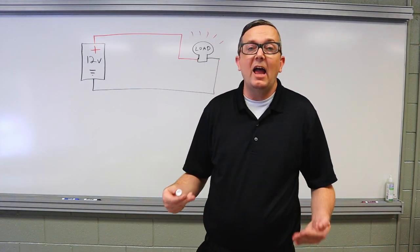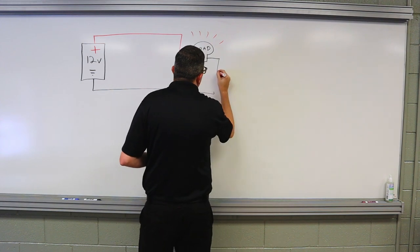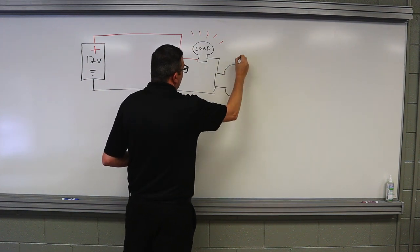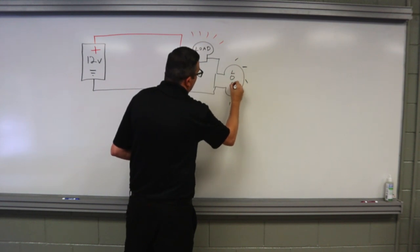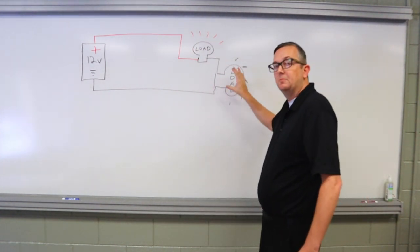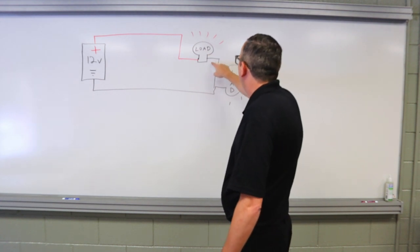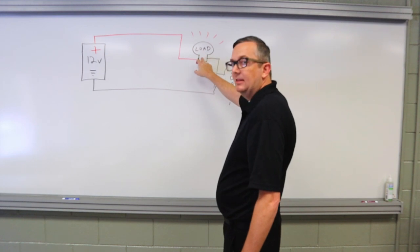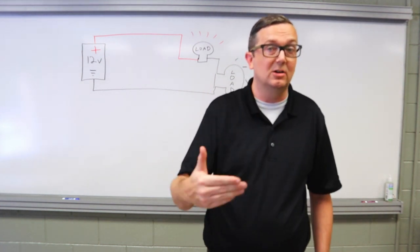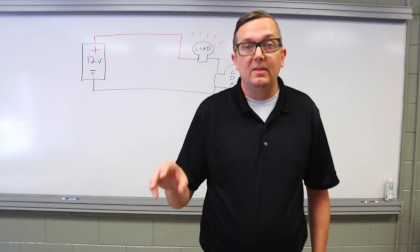You can have more than one load in a series circuit — they just go back to back. The issue is you get a Christmas light situation: if one bulb goes out, the other goes out as well, because current must flow through both bulbs. If there's any break in the circuit, you lose the whole circuit. The load in a series circuit also acts as a conductor — that's very important to remember.